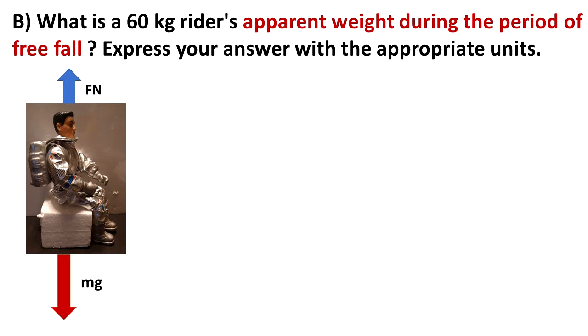Express their answer with the appropriate unit. Let's start from the same forces that we had before. Let's assume that there is a normal force going up and mg going down. Now that we have the free body diagram, we will assume that the ride and the person are in free fall.